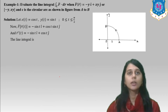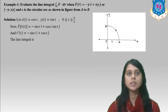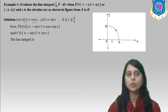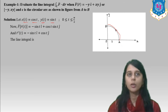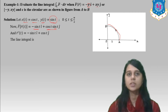Now evaluate the line integral ∫F-bar · dR-bar, where F-bar = −y·i-hat + xy·j-hat and C is a circular arc from a to b. For the circular arc: x(t) = cos t, y(t) = sin t, with t from 0 to π/2. So R-bar′(t) = −sin t·i-hat + cos t·j-hat.